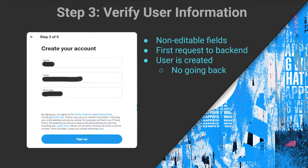The next phase is verifying the information. On the front end this will just be non-editable fields showing your user information — basically saying 'this is what we're going to store in the back end.' If you want to change anything you have to go back to the first page. This will actually be the first request and is what we're going to work on in this episode. At this point the user is created with the basic information: first name, last name, email, and birth date, and we'll add in other information as we go.